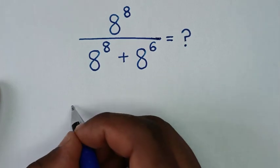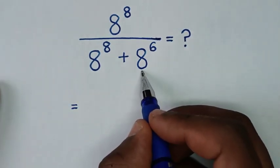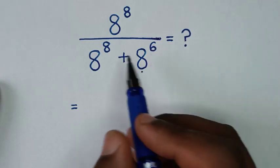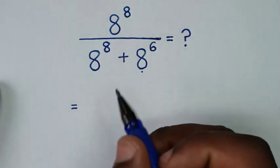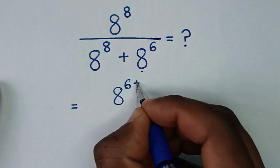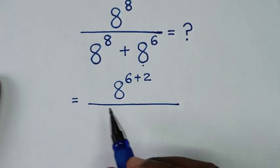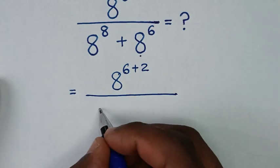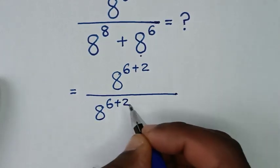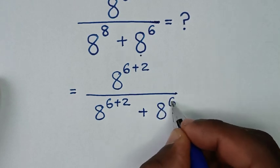So it will be equal to — here, 8 power 6 is the smallest exponent, so we'll factor it out. In the numerator, 8 power 8 is the same as 8 power 6 plus 2. In the denominator, 8 power 8 is also the same as 8 power 6 plus 2, then plus 8 power 6.